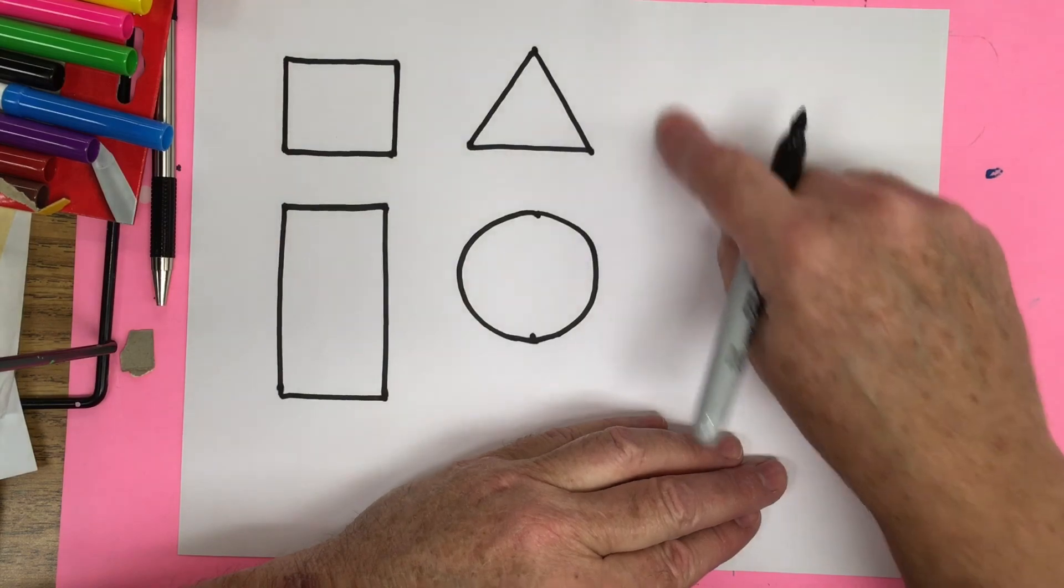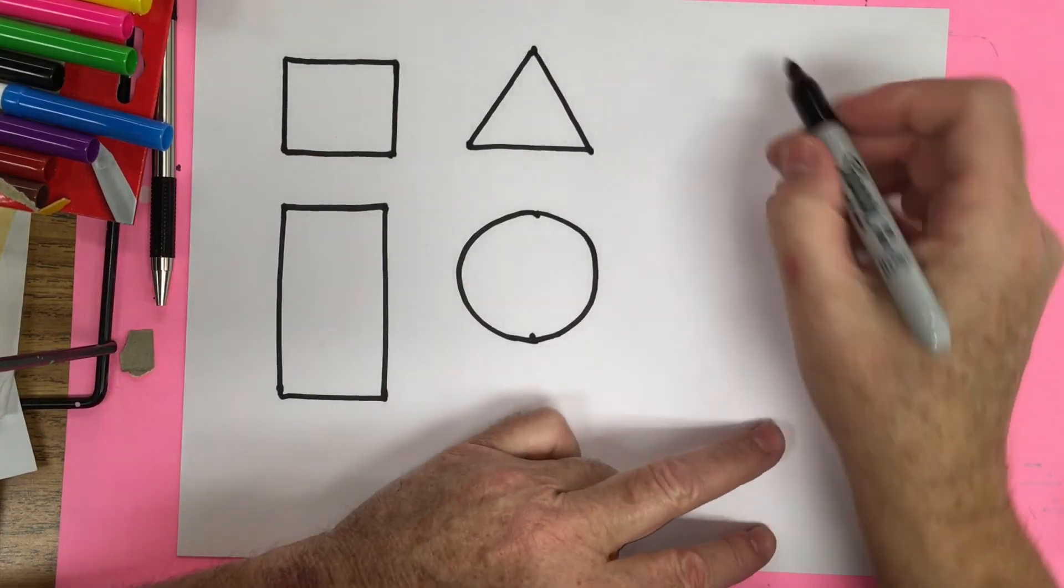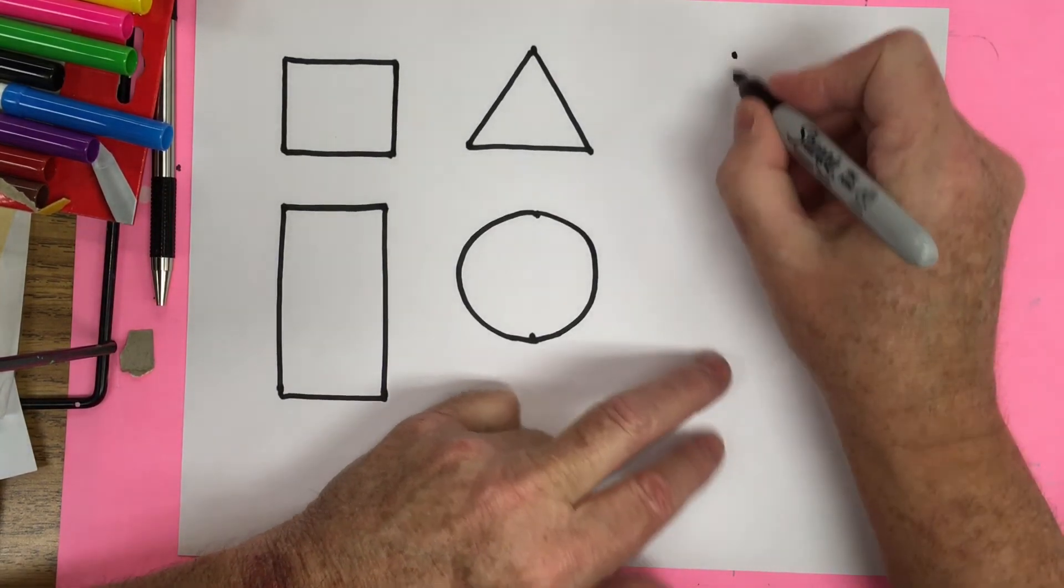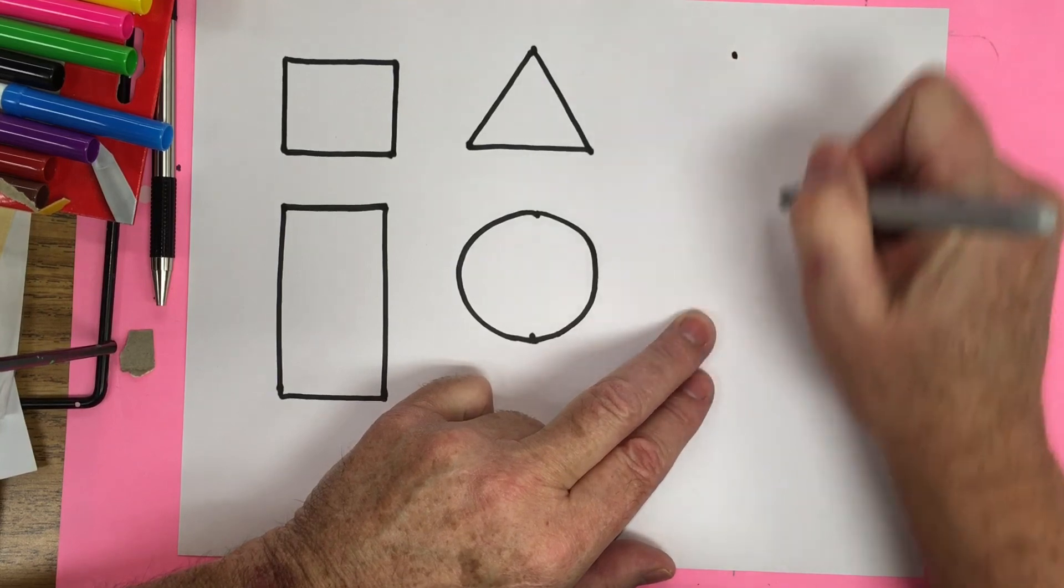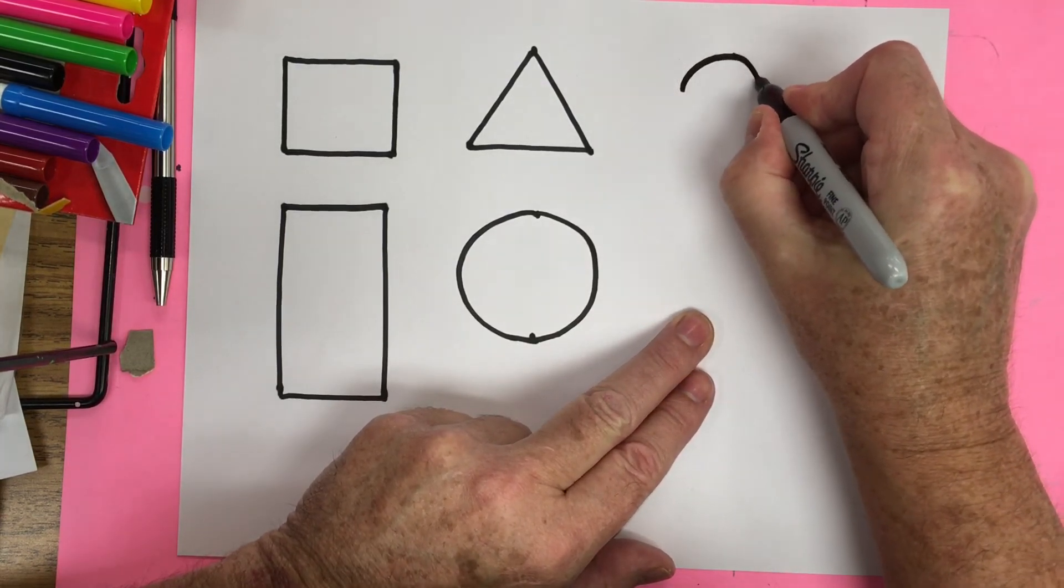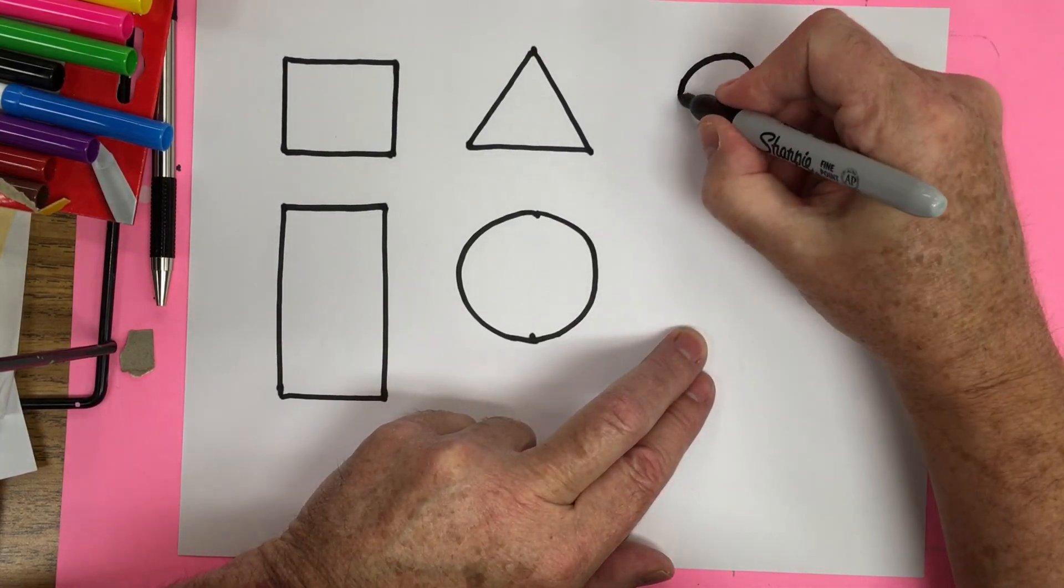The next shape we're going to make is an oval. So for the oval, we're going to start at the top here, put a dot, and we're going to have it come down and around. So for the oval, I'm going to make a curve, like we would make a circle. It's kind of a rainbow arch.